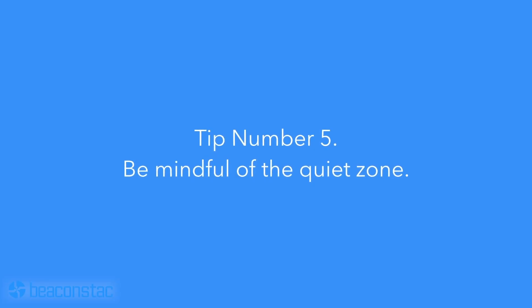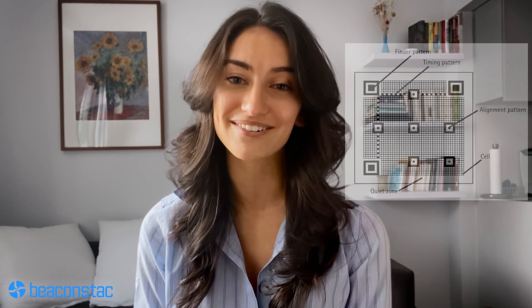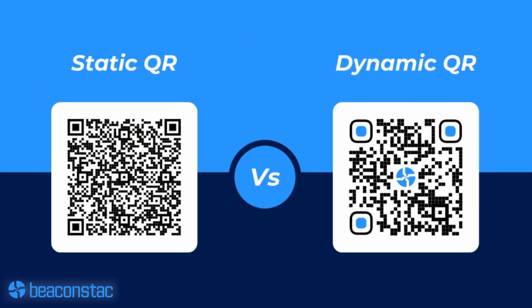Tip number five: be mindful of the quiet zone. A quiet zone is the area around the corners of the QR code. A properly spaced QR code can assist scanners in differentiating between their surroundings and the code. If the space between the quiet zone and the module is overcompensated, the code becomes unreadable. Overcrowding the quiet zone occurs in the case of static QR codes when a large amount of data is entered into a single code and the pixels shrink, making the code appear busy. You can avoid this by using dynamic QR codes. Because dynamic QR codes use a placeholder URL, you can include as much information as you want without making it look cluttered.